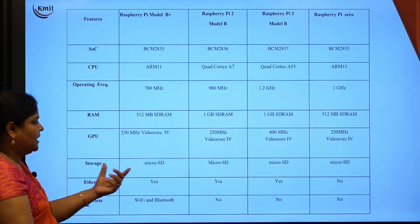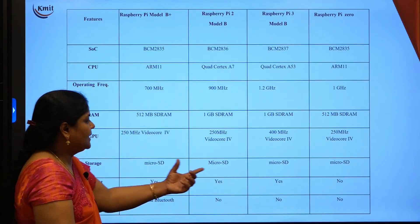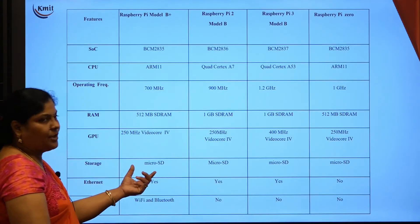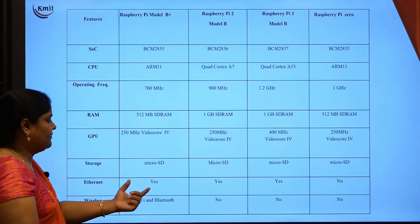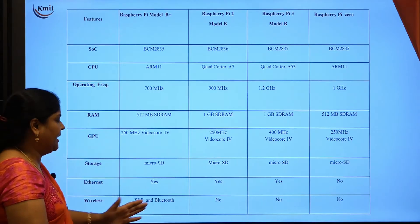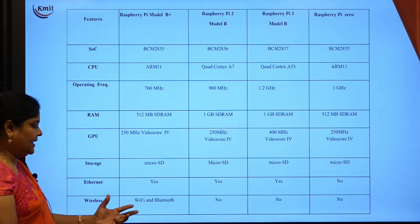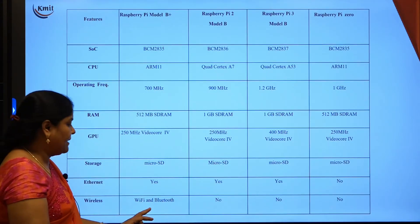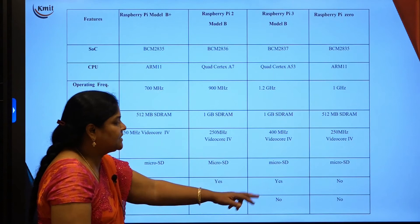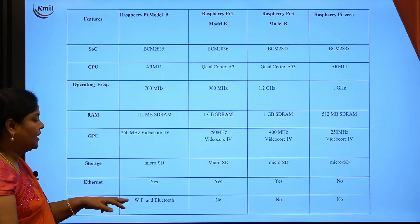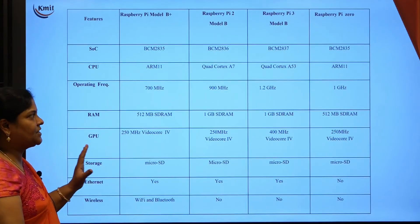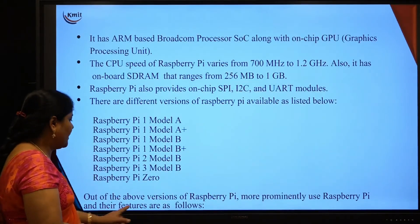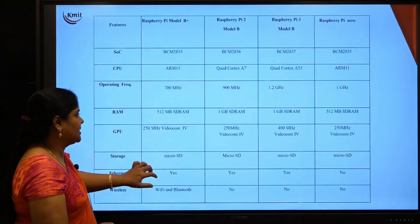Storage uses micro SD across all boards, as an SD card is required to install the operating system. Ethernet is supported by all boards. The newer versions like Raspberry Pi 3 Model B+ support Wi-Fi and Bluetooth, but previous versions do not support this Wi-Fi module. These features help determine which board is most prominent for IoT applications.